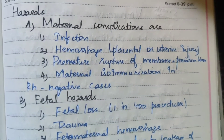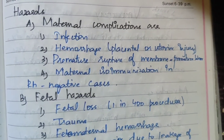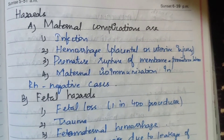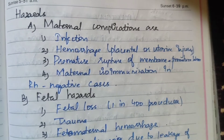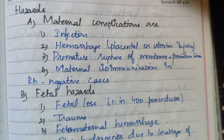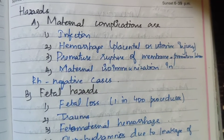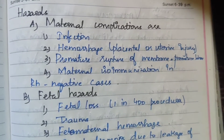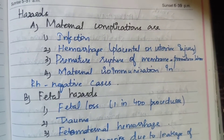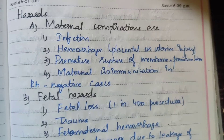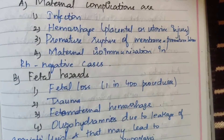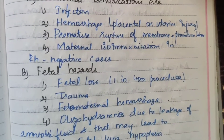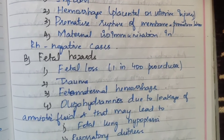Hazards — that is, complications. For the maternal side: infection (use aseptic technique), hemorrhage and bleeding, premature rupture of membranes, premature labor, and maternal isoimmunization in RH-negative cases.